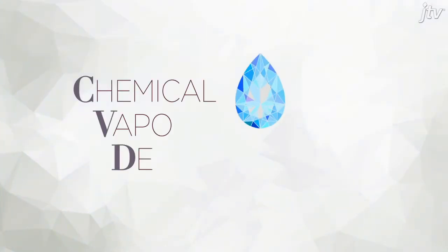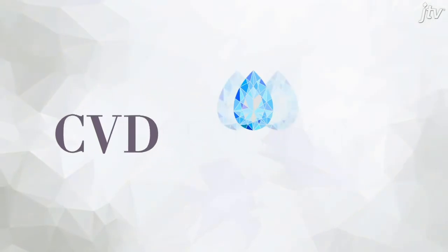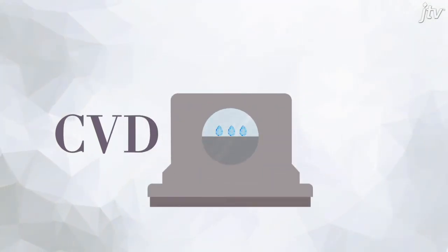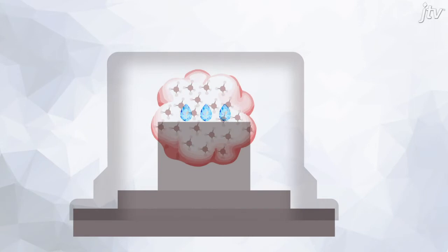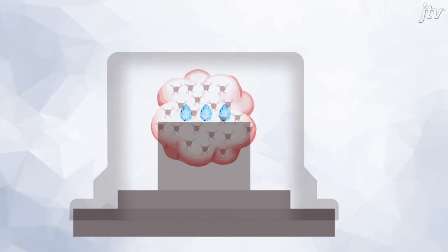One process used to create a diamond is known as CVD. Diamond seeds are placed in a growth chamber. Then a hot plasma ball of superheated carbon-enriched gas is infused.